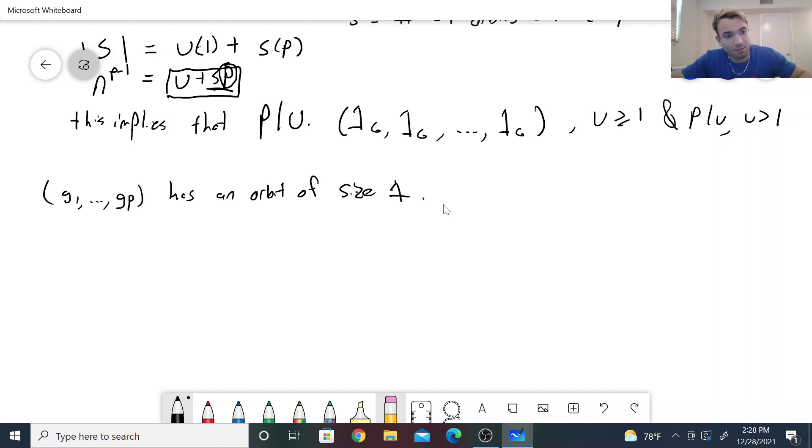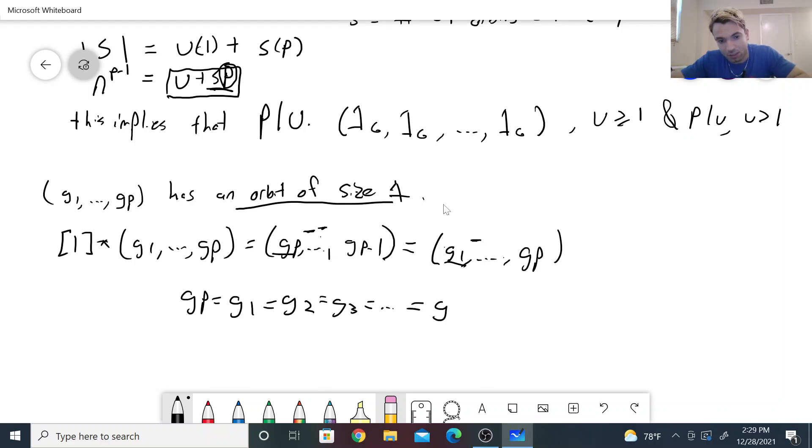Well, that means that if I apply this action onto this element, we know from how we define the action, this is (g_p, ..., g_(p-1)), and this term right after g_p is g_1. But because it has an orbit of size 1, this is actually equal to (g_1, ..., g_p). Well, what is this telling us? This tells us that g_p, the first slot is equal to g_1. Actually, after g_p is g_1, so g_1 is equal to g_2. So g_1 is equal to g_2. The next one is saying that g_3 is equal to g_2, and so forth, all the way up to g_p minus 1.